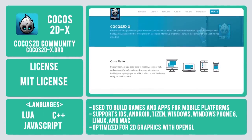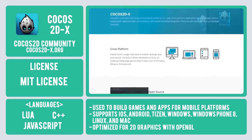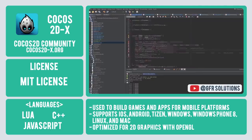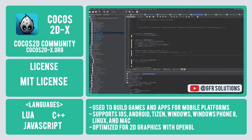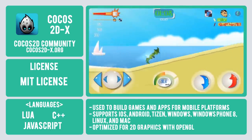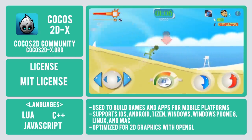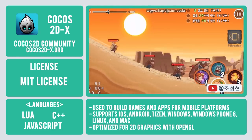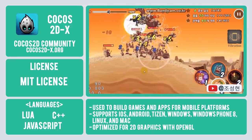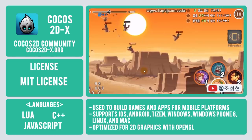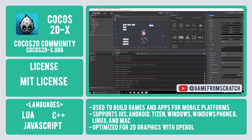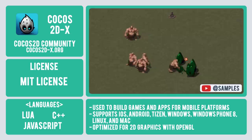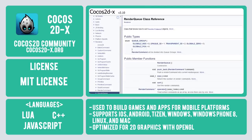5th on our list is Cocos 2DX, just one branch of the Cocos 2D open source game framework written in C++. Cocos 2DX is widely used to build games and apps for mobile platforms. The full list of supported platforms includes iOS, Android, Tizen, Windows, Windows Phone 8, Linux, and Mac. Containing a brand new graphic renderer, the Cocos 2DX renderer is optimized for 2D graphics with OpenGL. It supports skeletal animation, sprite sheet animation, and adopts a render queue design.